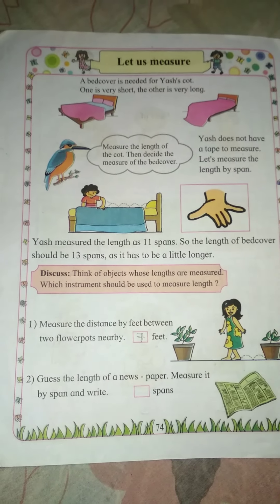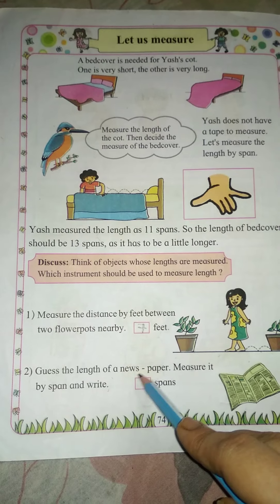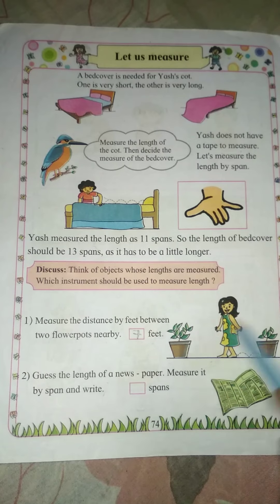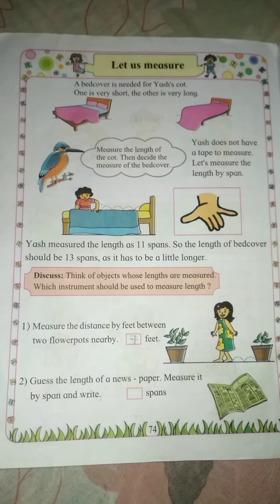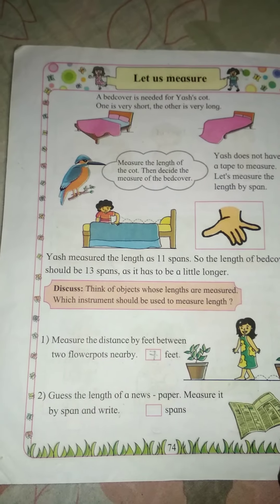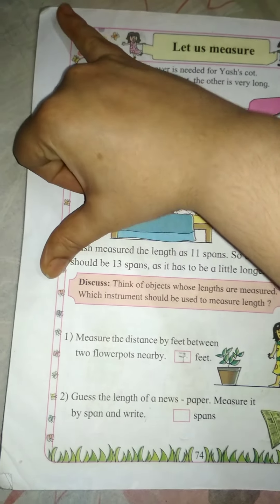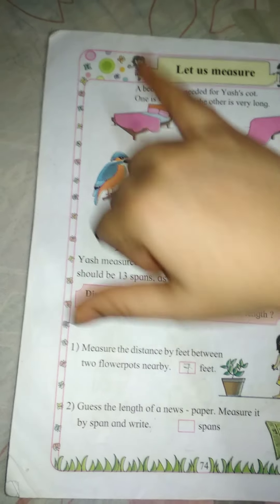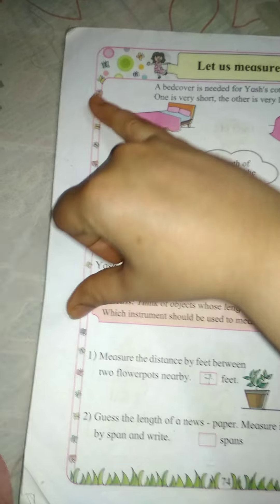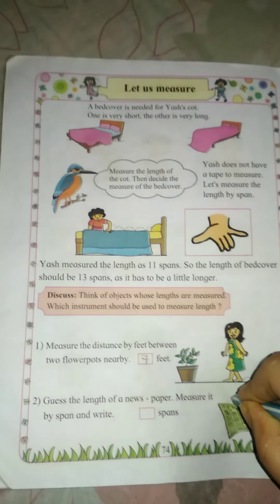Guess the length of a newspaper, measure it by span, and write the number of spans. How many spans does a newspaper measure? One, two — it comes to 2 spans. You can measure it and write your answer here.